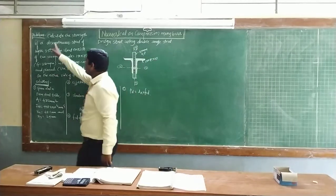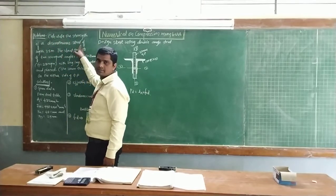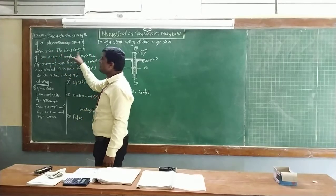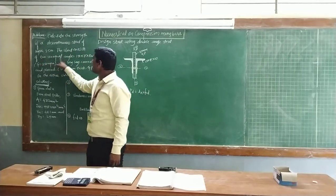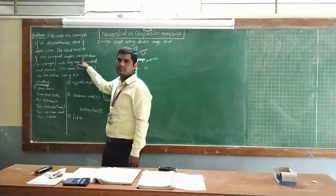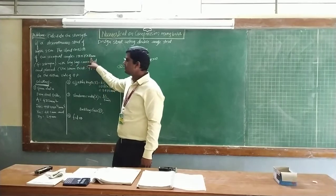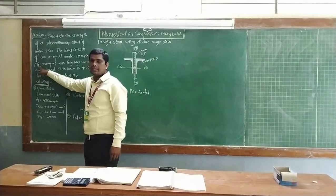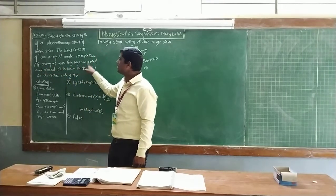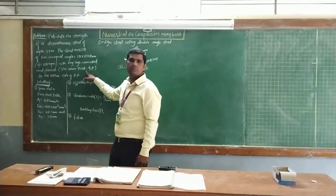This is the statement: Calculate the strength of a continuous strut of length 3.5 meters. The strut consists of two unequal angles, 150mm by 75mm by 10mm. The yield stress is 250 N per mm squared or MPa, with long legs connected to a gusset plate.